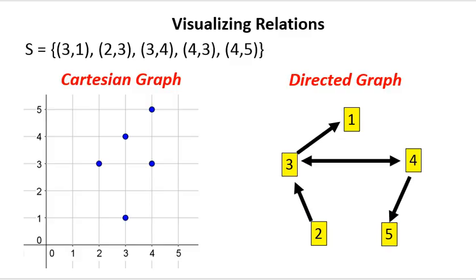The element (3, 1) is represented by the point at (3, 1). We've got (2, 3), (3, 4), (4, 3), and (4, 5). So your relation is composed of those five points on a Cartesian axis.